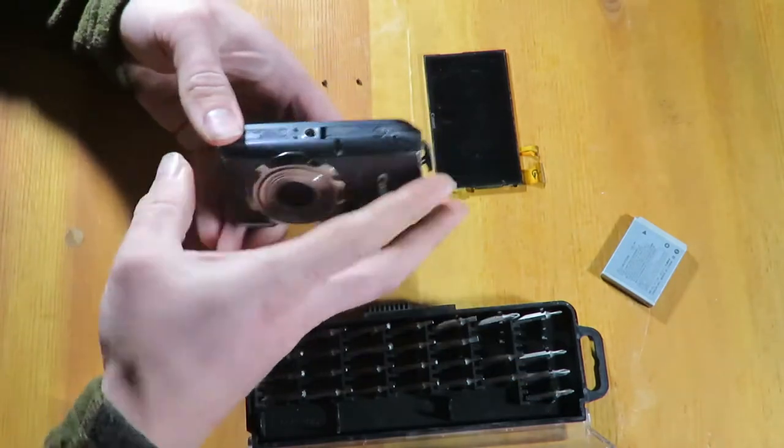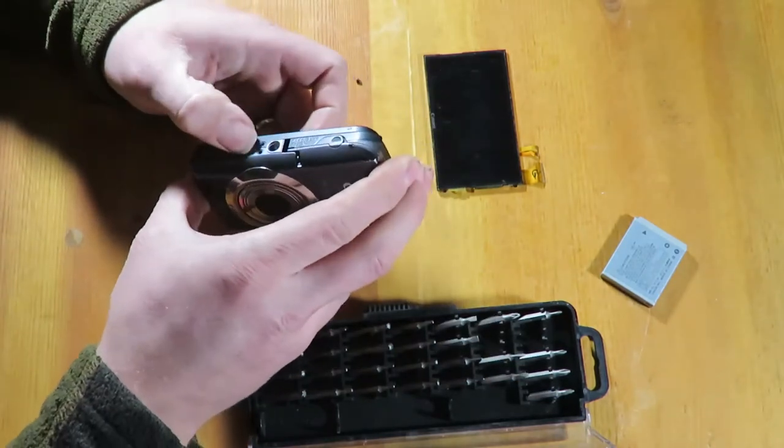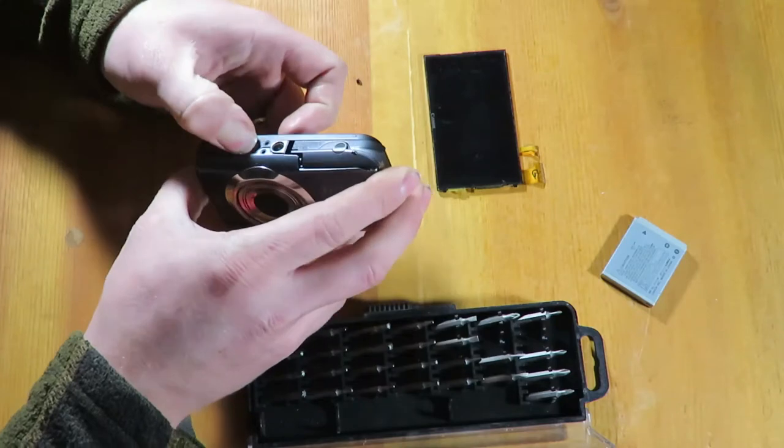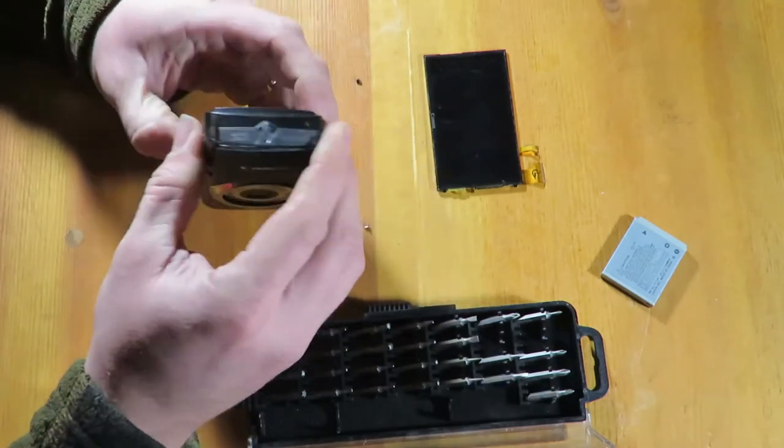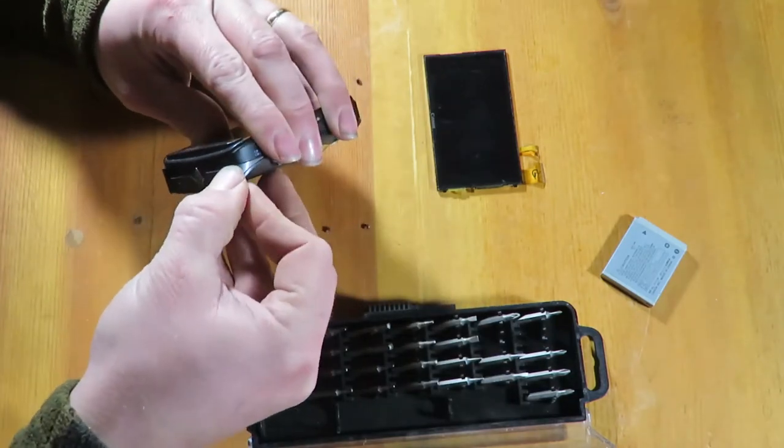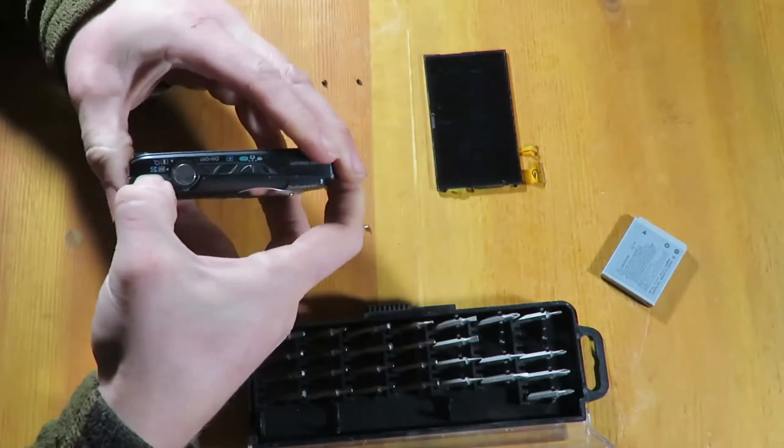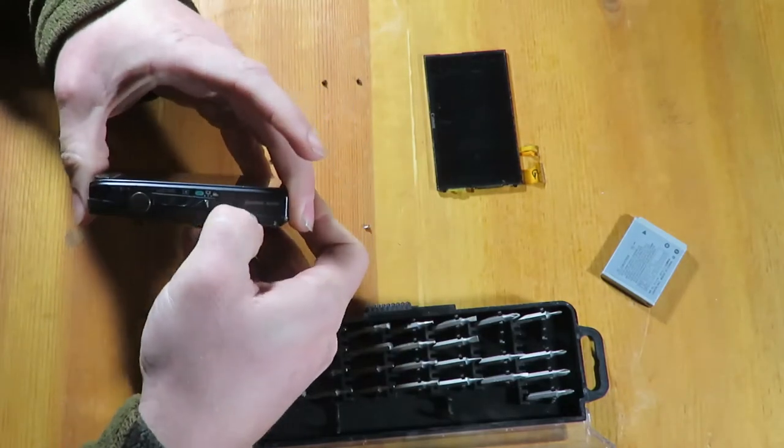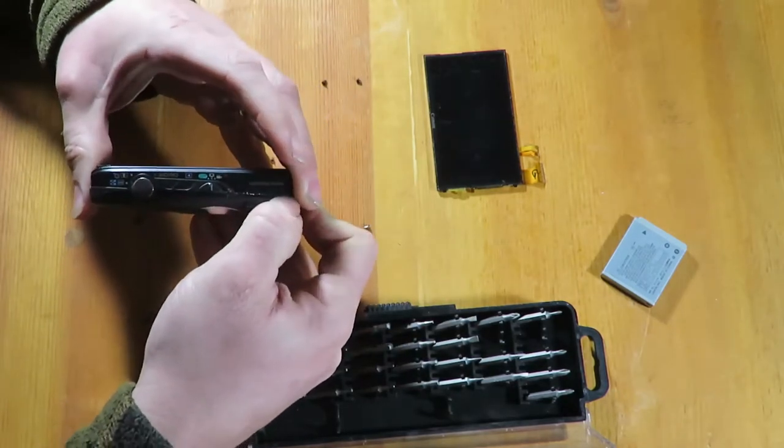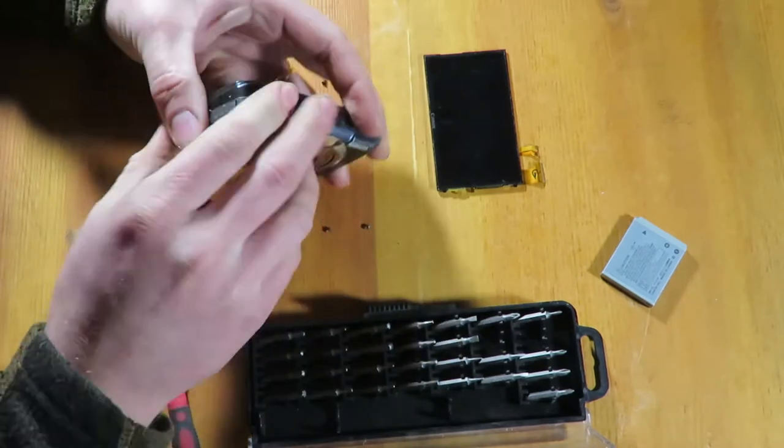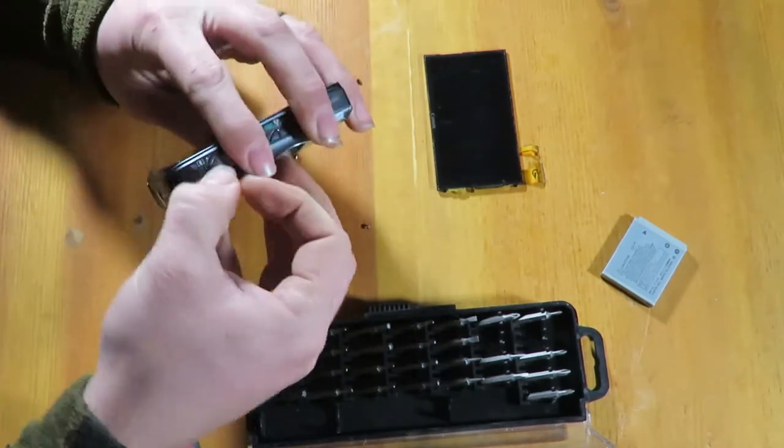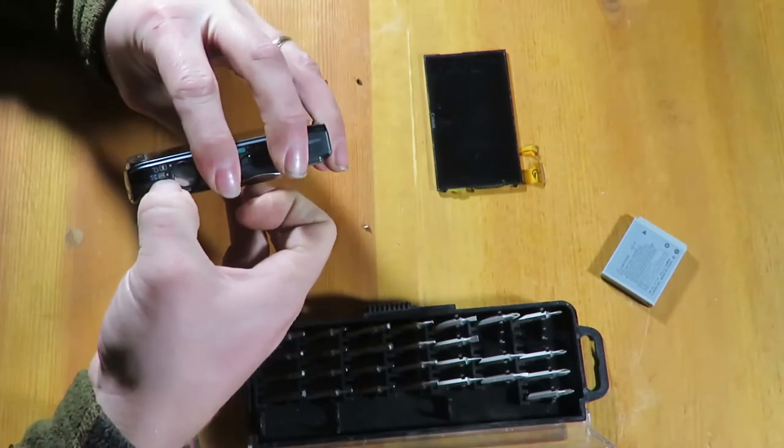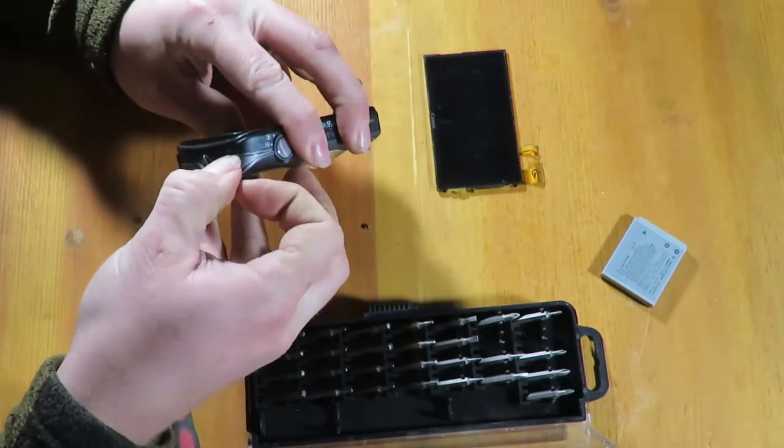So, with all the screws out, we can begin pulling the back off. You just kind of separate it along the edges. The front and the back both come off, and I don't remember off hand if the front is going to try to jump off on this one or not.